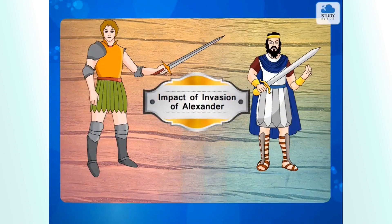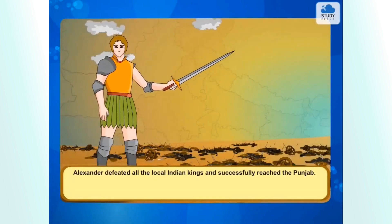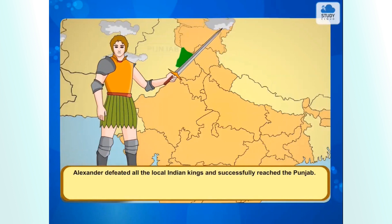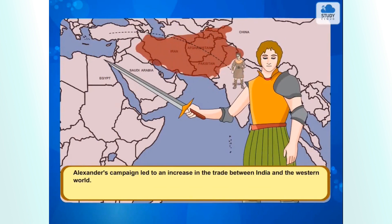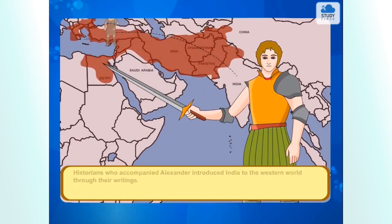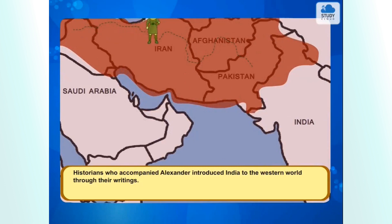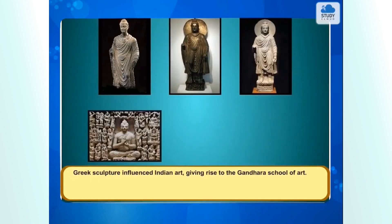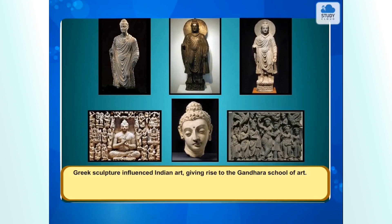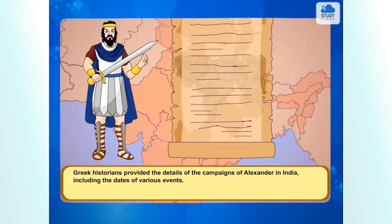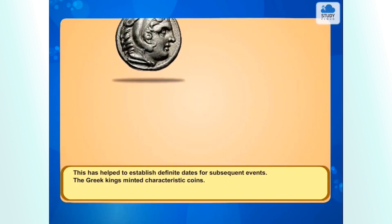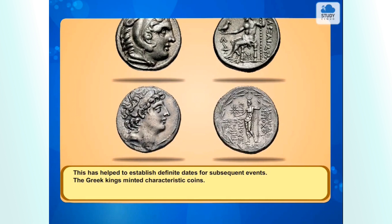Alexander defeated all the local Indian kings and successfully reached Punjab. Alexander's campaign led to an increase in trade between India and the western world. Historians who accompanied Alexander introduced India to the western world through their writings. Greek sculpture influenced Indian art, giving rise to the Gandhara school of art. Greek historians provided details of the campaigns of Alexander in India, including the dates of various events. This has helped to establish definite dates for subsequent events.